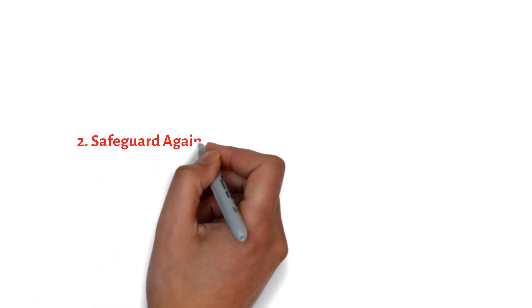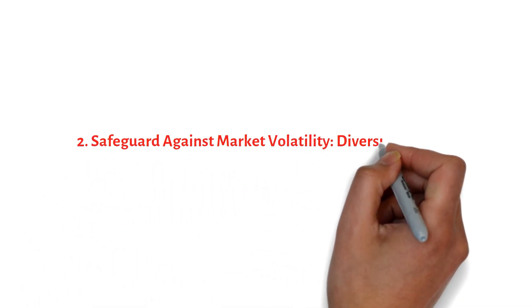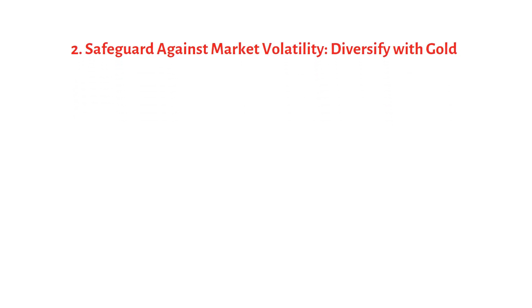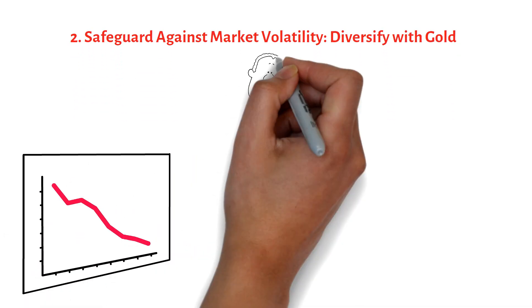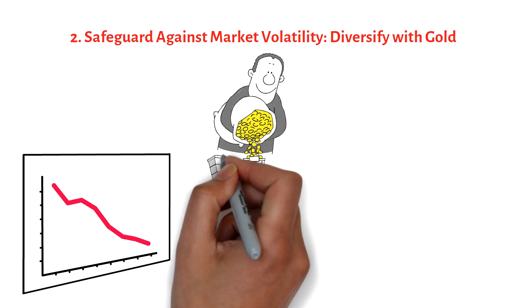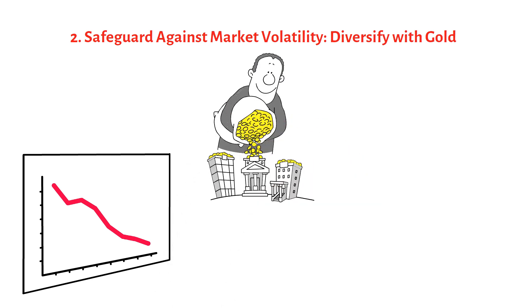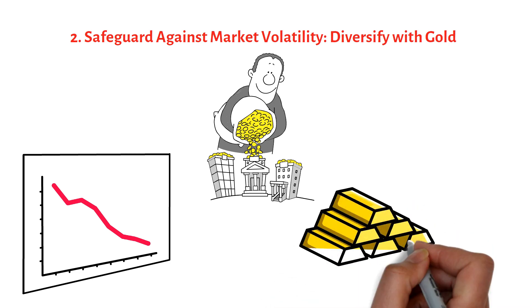Number two: Safeguard against market volatility. Diversify with gold. In times of market volatility and economic uncertainty, diversifying your investment portfolio becomes crucial. One asset class that has historically served as a hedge against inflation and market fluctuations is gold.